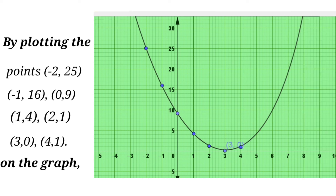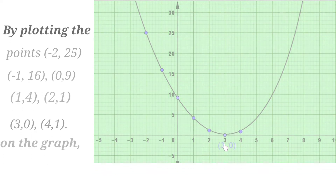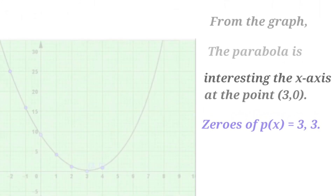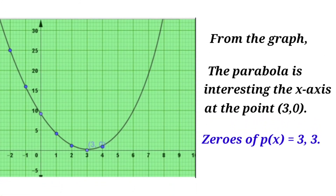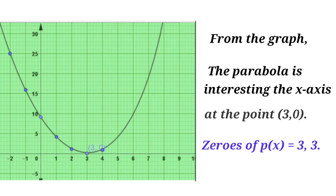The point of intersection of the parabola and the x-axis is (3, 0). Therefore, from the graph, the parabola intersects the x-axis at the point (3, 0). The zeros of p(x) are 3 and 3 — it has two equal zeros. This was the second bit from the third problem. In the next class, we will do the third bit. Thanks for watching.